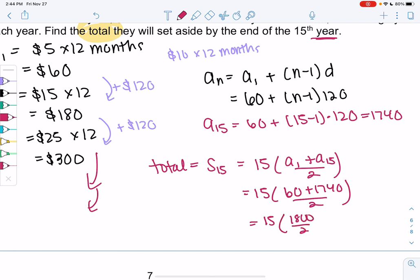And then you can go ahead and calculate that. So 15 times 1,800 over 2 gives me a total of 13,500.